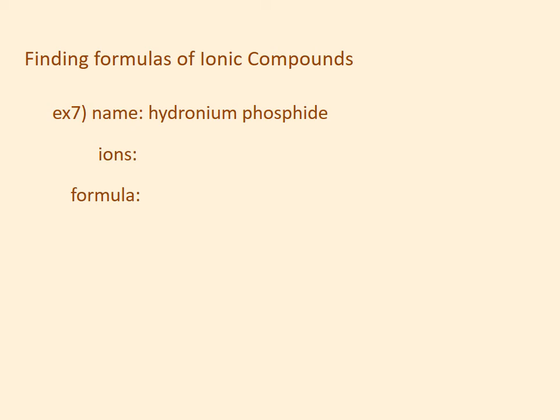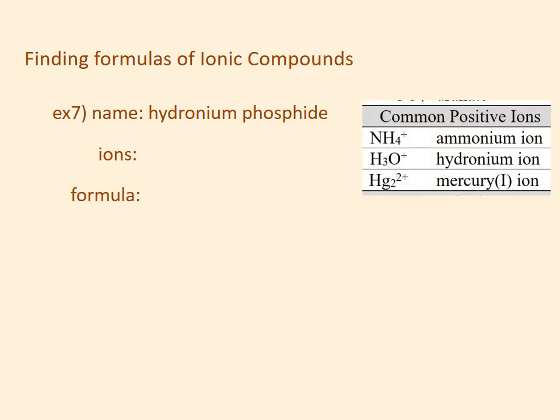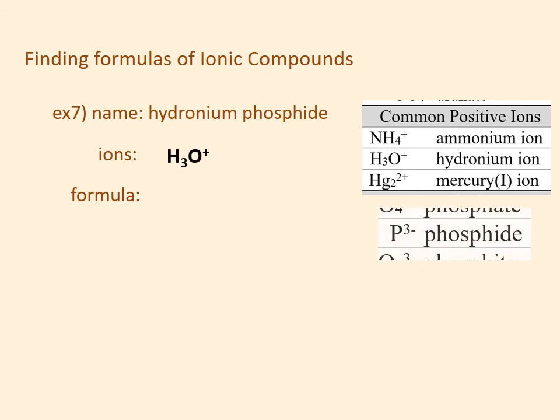Example 7: hydronium phosphide. You can look all over your periodic table and you will not find hydronium — that's because it's not there. Hydronium is found on a data table titled common positive ions somewhere else on your formula sheet. Make sure you locate where this box is, as you will have questions with ammonium ion and hydronium ion. Hydronium is H₃O positive. I look up phosphide on my common negative ions list — that's P 3 minus. The lowest common multiple of plus 1 and minus 3 is 3, so to get a plus 3 on the front I will need 3 hydroniums, and to get a minus 3 on the back I will need 1 phosphide.